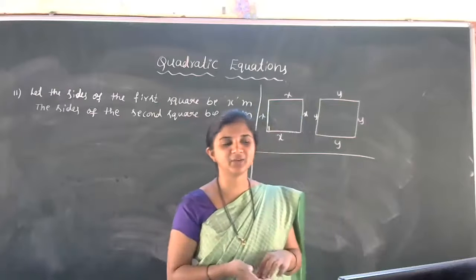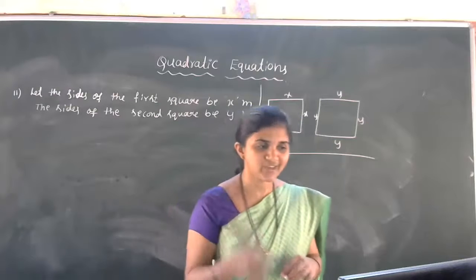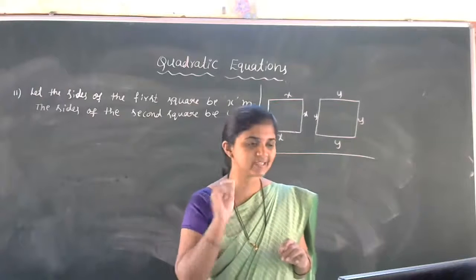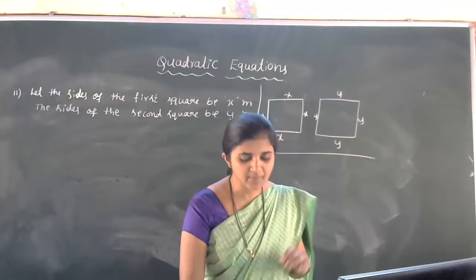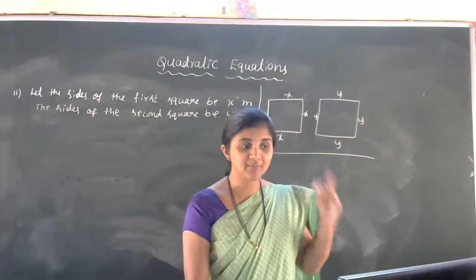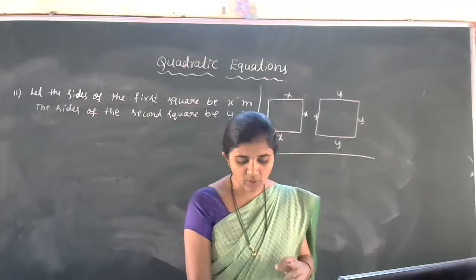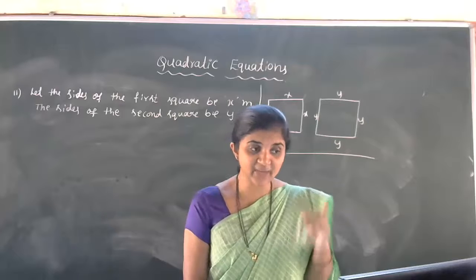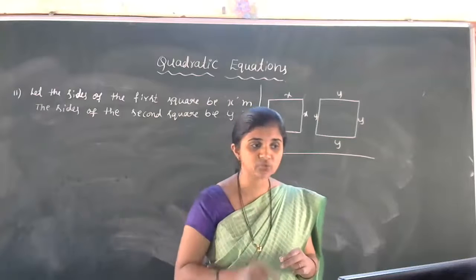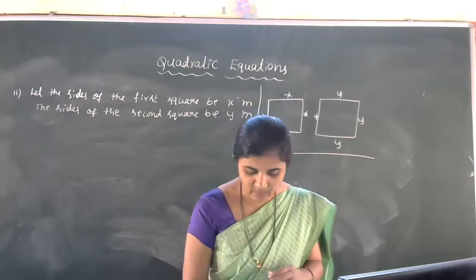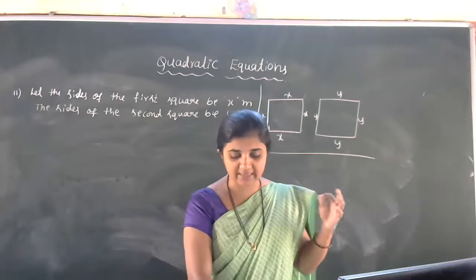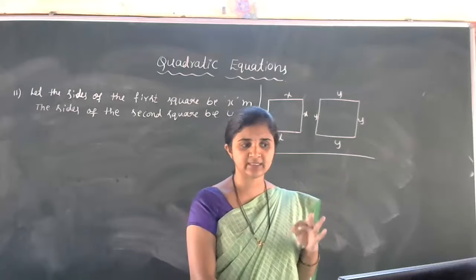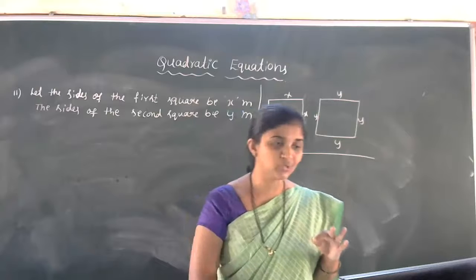Welcome back to mathematics class. We are discussing the last problem of exercise 10.3. Let us read the question: the sum of the areas of two squares is 468 square meters. If the difference of their perimeters is 24 meters, find the sides of the two squares.